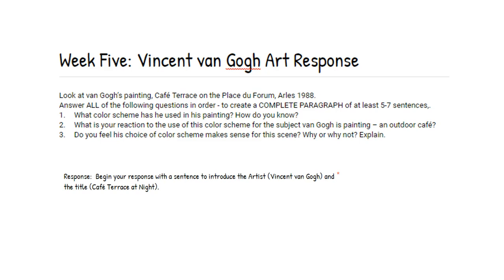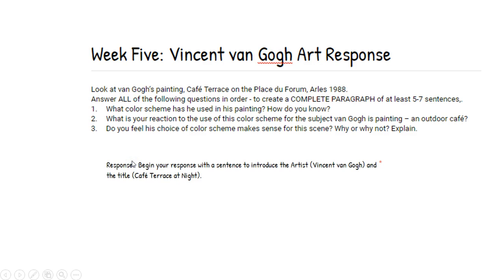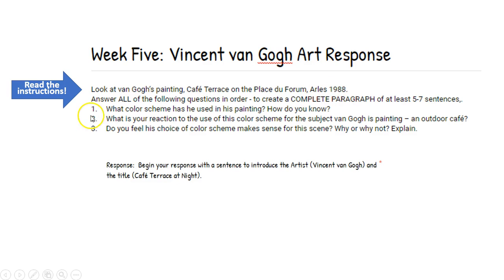This was the assignment. I want to look at breaking down the assignment, making sure that you understand what you were supposed to do, making sure that you're reading everything correctly, and then we're going to walk through the steps. To begin, the first thing you want to do is read through all of the instructions. For week five, the Vincent van Gogh art response, you're going to look at van Gogh's painting Café Terrace on the Place de France from Arles 1888, and answer all of the following questions in order to complete a complete paragraph of at least five to seven sentences.